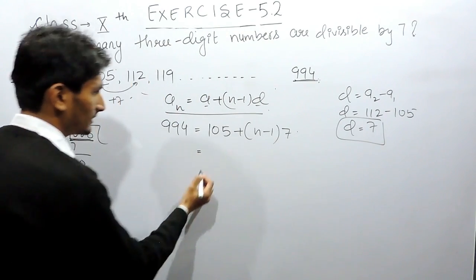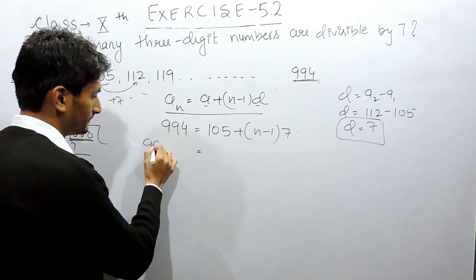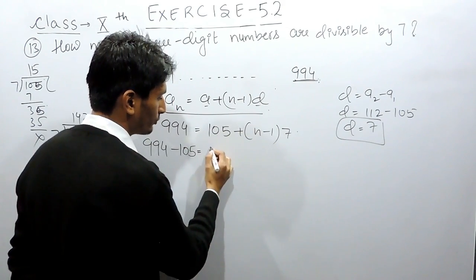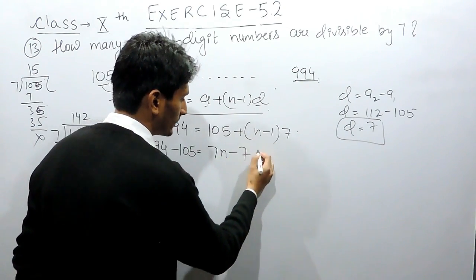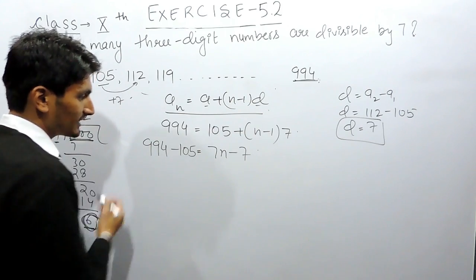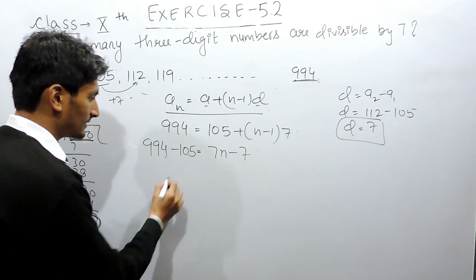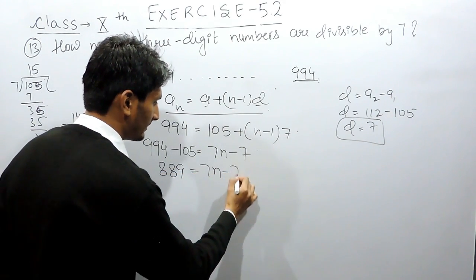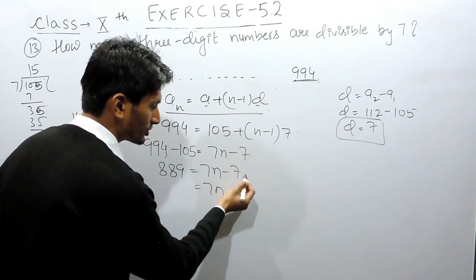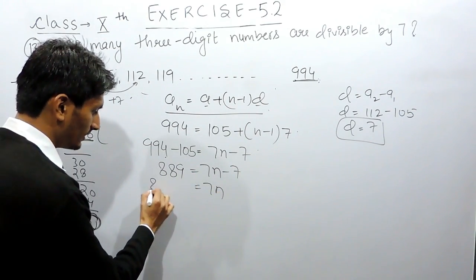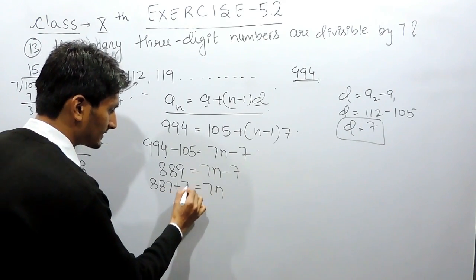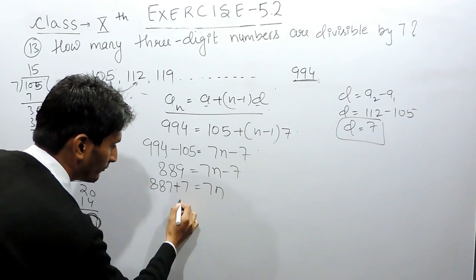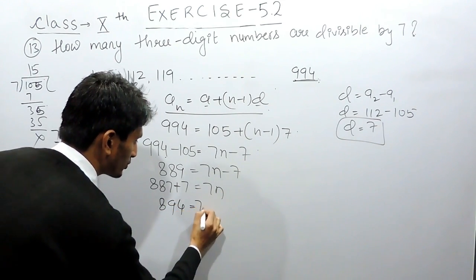So solving this, this term can be shifted here. This plus will become minus, and I can open this bracket by multiplying 7 with both terms. Now, this plus minus is minus. So 994 minus 105 is 889, equals 7n minus 7. So 7n—this constant can be shifted to this side—this will be plus 7, and this will be 889 plus 7 is 896 equals 7n.